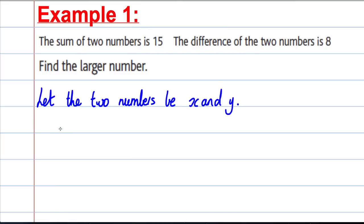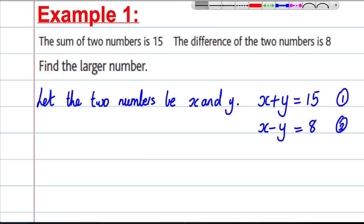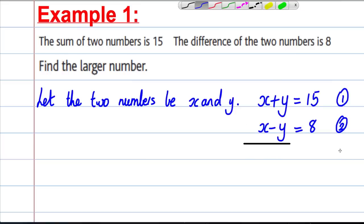The sum of the two numbers is 15, so we could say that x plus y is equal to 15. And it says the difference of the two numbers is 8, so x subtract y is equal to 8. I'm going to assume x is the bigger number. Now call these equation 1 and equation 2. If we add these equations together, the y's will be eliminated and we'll have an equation just with x's.